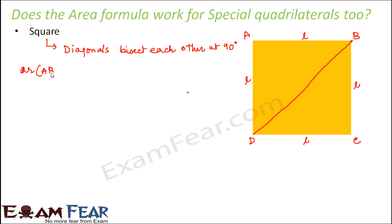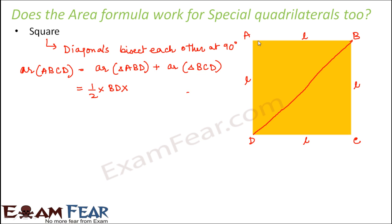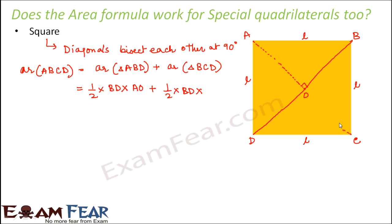The area of square ABCD equals area of triangle ABD plus area of triangle BCD. The area of triangle ABD is half into base BD into height — the perpendicular drawn from A to BD. Let us call this point O, so this height is AO. Similarly, the area of triangle BCD is half into base BD into the perpendicular drawn from point C to BD.